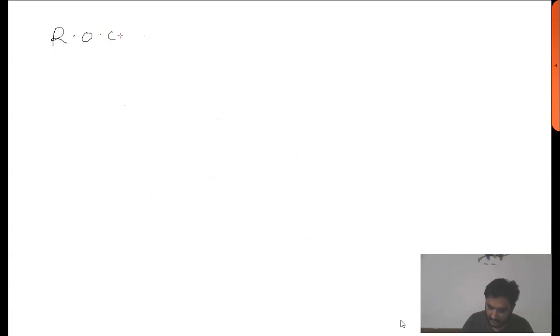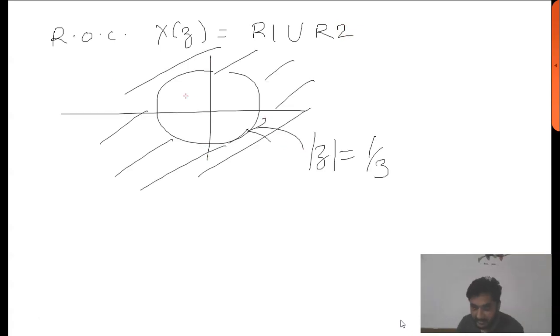The ROC will be 1 over 2. The ROC of the whole X(Z) can be given as R1 union R2, and therefore the ROC will be this one, with radius of the circle mod of Z equals 1 over 3.